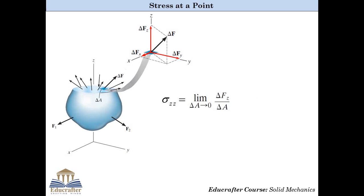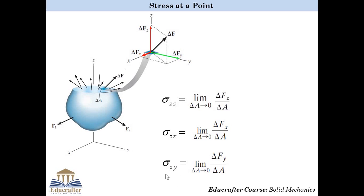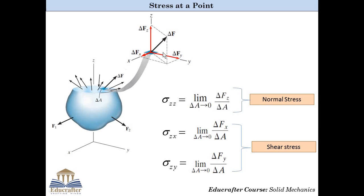Similarly, if we take the ratio of delta Fx to delta A, we get another stress component, sigma Zx. The nomenclature is the same: the plane of the elemental area is perpendicular to the Z axis so the first index is Z, and the direction of delta Fx is along the X axis so the second index is X. Exactly in the same way, the ratio of delta Fy to delta A is termed sigma Zy. Force delta Fz acts normal to the plane of the element, so sigma Zz is termed normal stress. Forces delta Fx and delta Fy act along the plane, so their corresponding stress components are shear stresses.